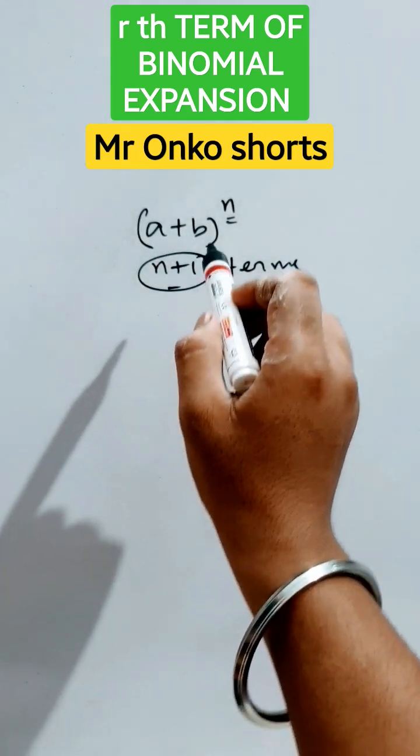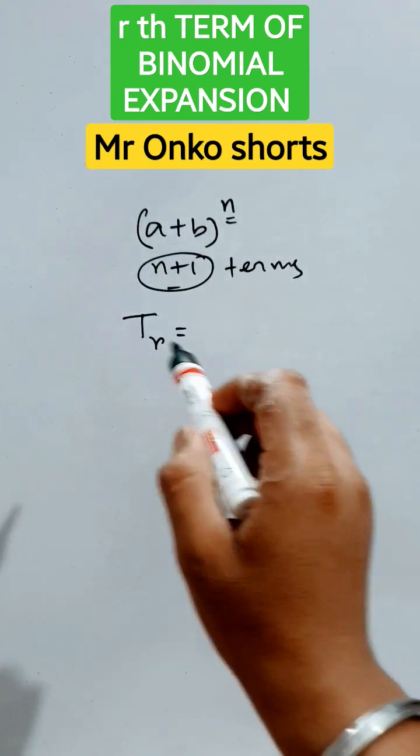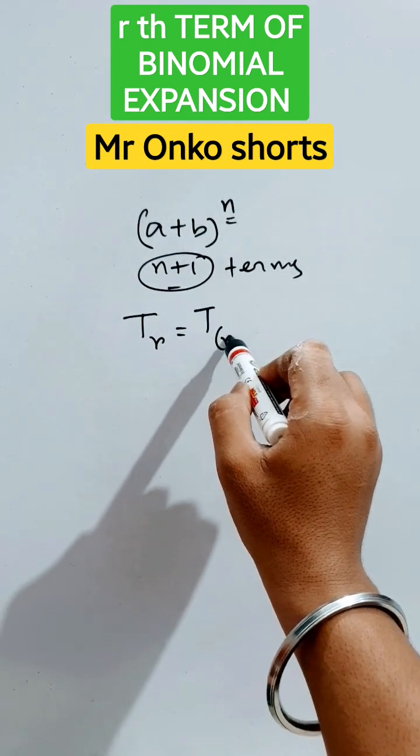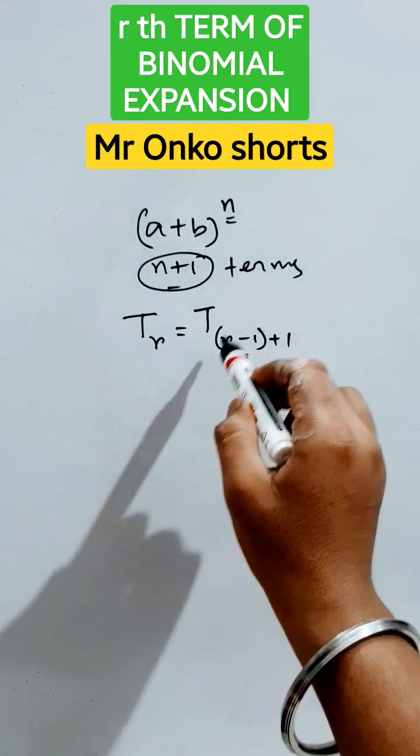If we are asked to find the rth term of the given expansion, then what will we do? First of all, we have to manage it as r minus one plus one. We have to focus on this r minus one in the whole procedure to find the rth term.